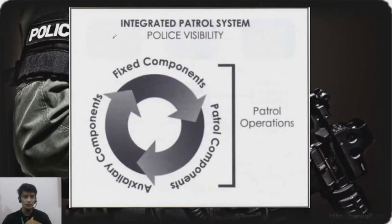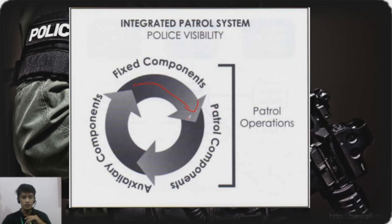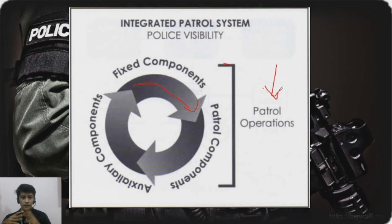The IPS diagram shows how the three components — fixed, patrol, and auxiliary — are coordinated with each other, represented by arrows showing the coordination needed in conducting patrol operations. This ensures resources are being utilized well for effective patrol operations. This is the so-called Integrated Patrol System, reflecting the police visibility of the PNP.